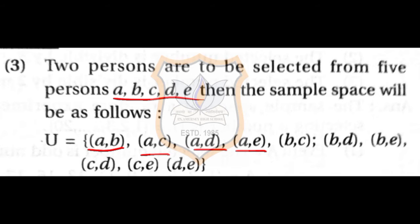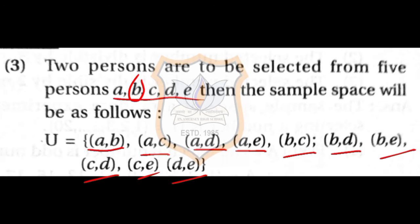Keeping C constant: C,D and C,E (since A,C and B,C are already taken). Keeping D constant: only D,E remains (since A,D, B,D, and C,D are already taken). So this complete set is the sample space of the third part.